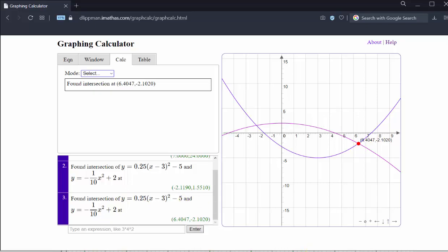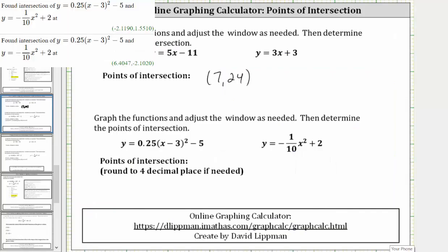Let's go ahead and record these in our work. We will go ahead and record them, rounding to four decimal places as given. So the first ordered pair here is approximately negative 2.1190 comma 1.5510. And the second point of intersection is approximately 6.4047 comma negative 2.1020.